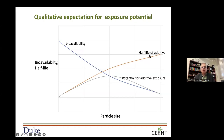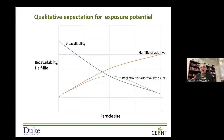Decreasing as we get to bigger sizes. If you think about the potential for additive exposure, you can think of there being a potential sweet spot — small enough to have more bioavailability, yet big enough that the leaching doesn't happen super fast. It will stay in the particle long enough to remain as it moves through, say, a digestive tract and is then taken up into the tissues of the organism.